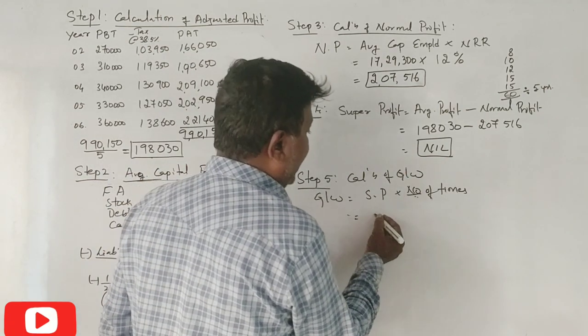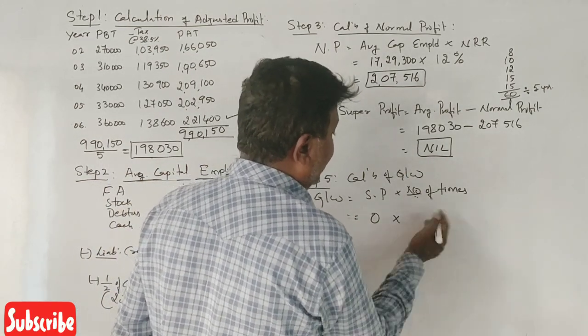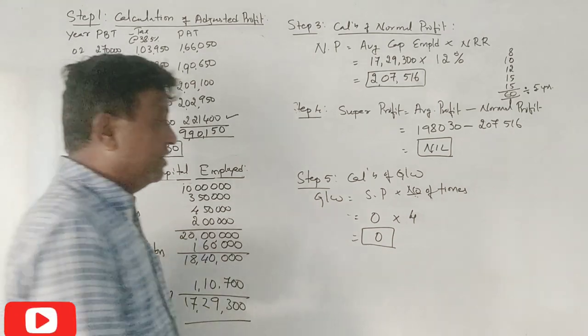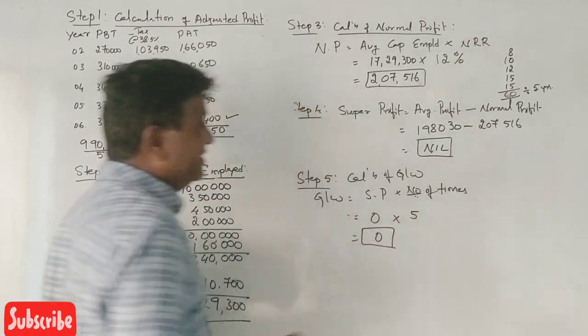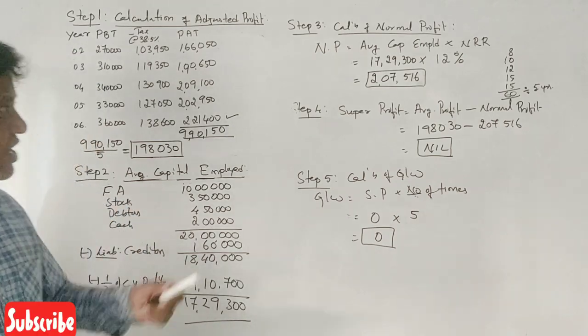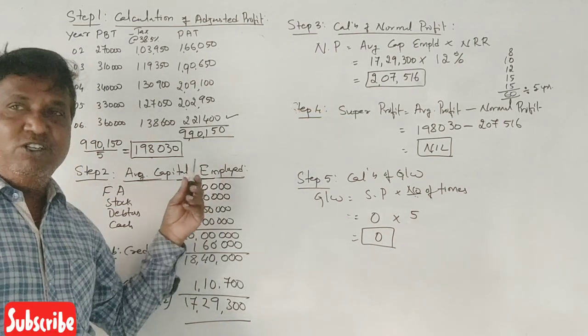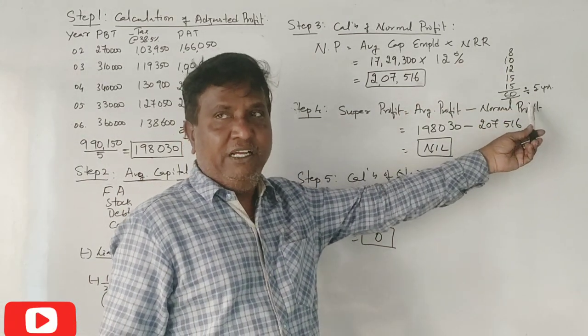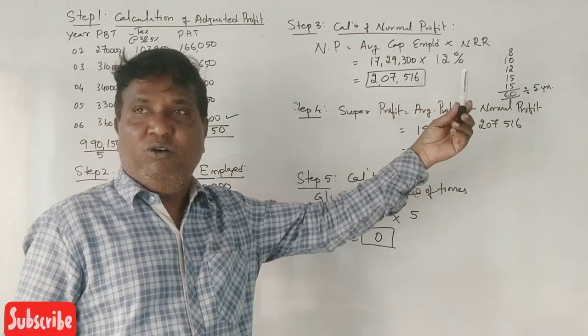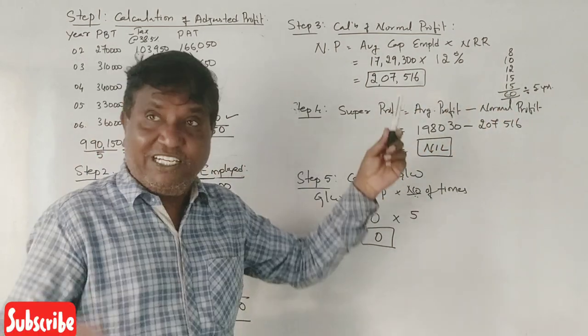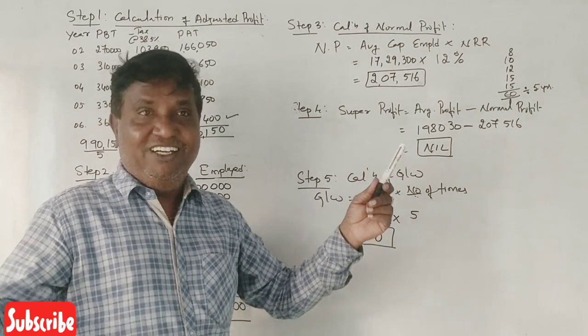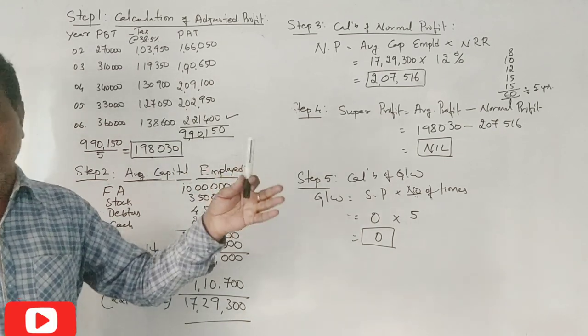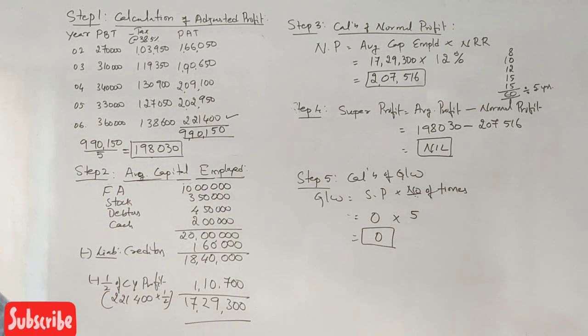Goodwill is equal to 5 times super profit. Since super profit is negative, goodwill cannot be calculated. The average profit is less than normal profit, meaning there is no goodwill. This is an interesting question.